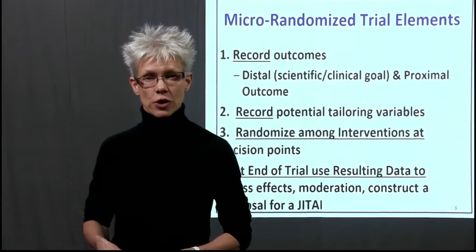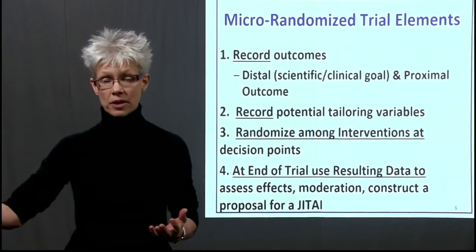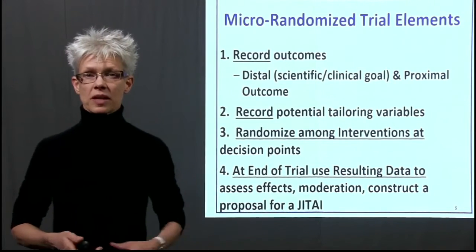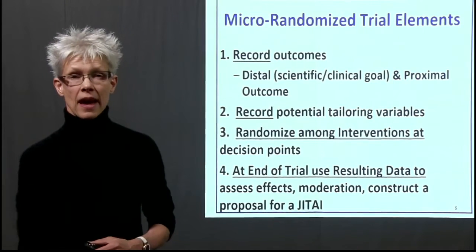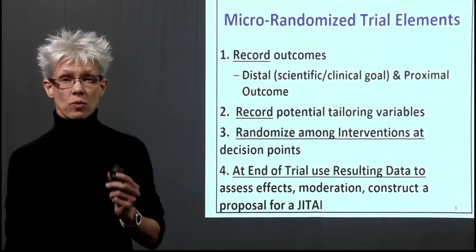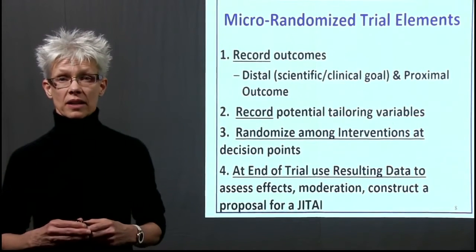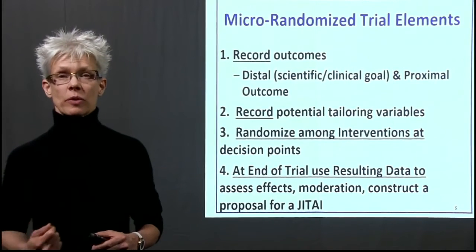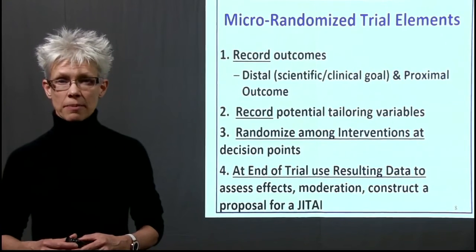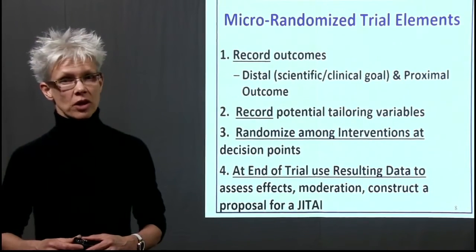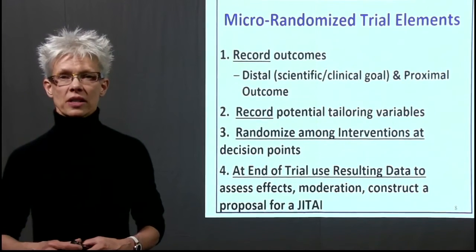Let's go through the elements of a micro-randomized trial. We always record our outcomes: the distal outcome is time to relapse, and the proximal outcome is the amount of stress in the subsequent hour after a decision point. Our tailoring variables — in this case, stress is the primary tailoring variable. At each decision point, we randomize between interventions: provide a reminder versus not. At the end of the trial, we assess our causal effects — whether stress impacts the effectiveness of the reminder, and potentially whether location also impacts effectiveness. Then we construct a proposal for a just-in-time adaptive intervention.